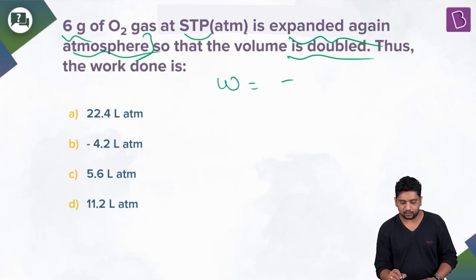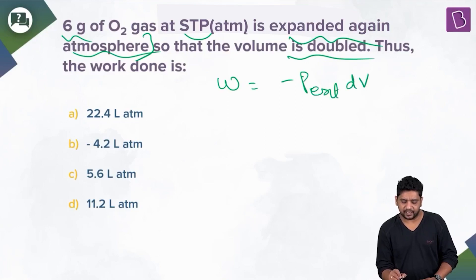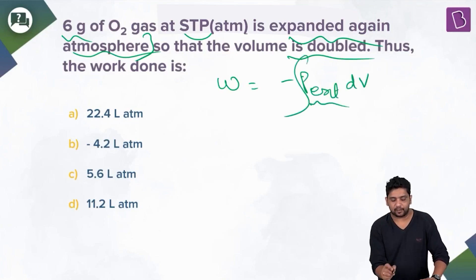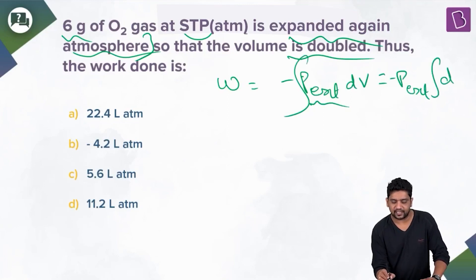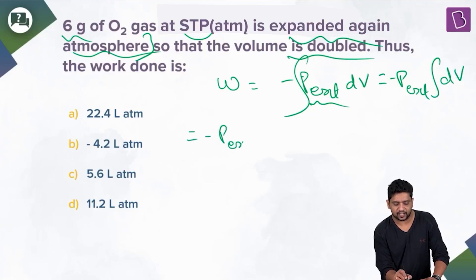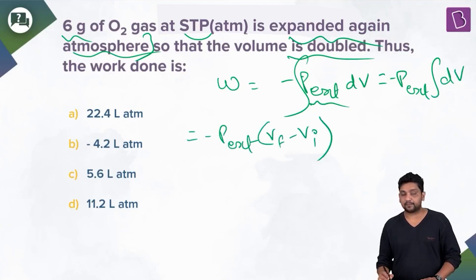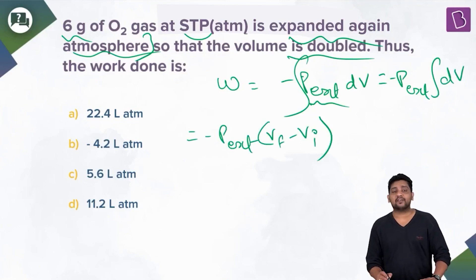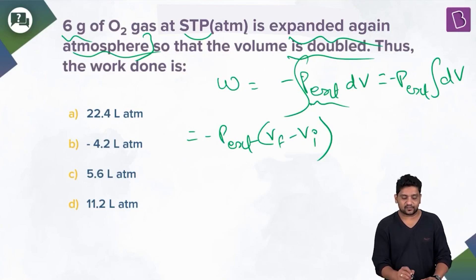Work done = −∫P_external dV. Since P_external is constant, this becomes −P_external × ΔV = −P_external × (V_final − V_initial). This is our formula for work done when external pressure is constant.